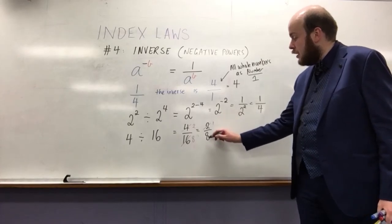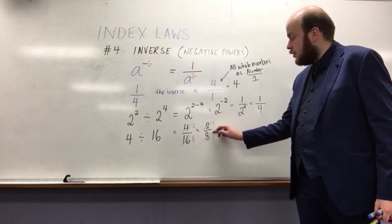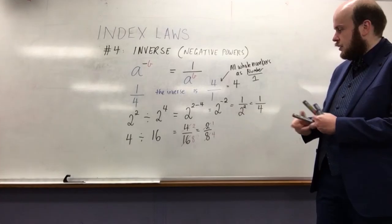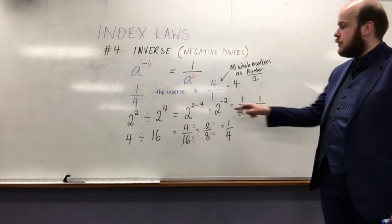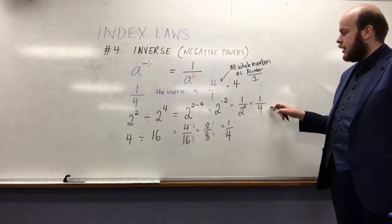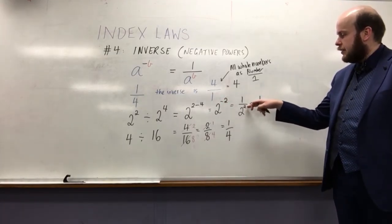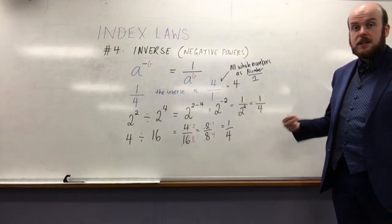2 divided by 2 would be 1, and 8 divided by 2 would be 4. So, my final answer is 1 quarter. And therefore, we have been able to prove that this negative is the same as putting it underneath, the same as the inverse.